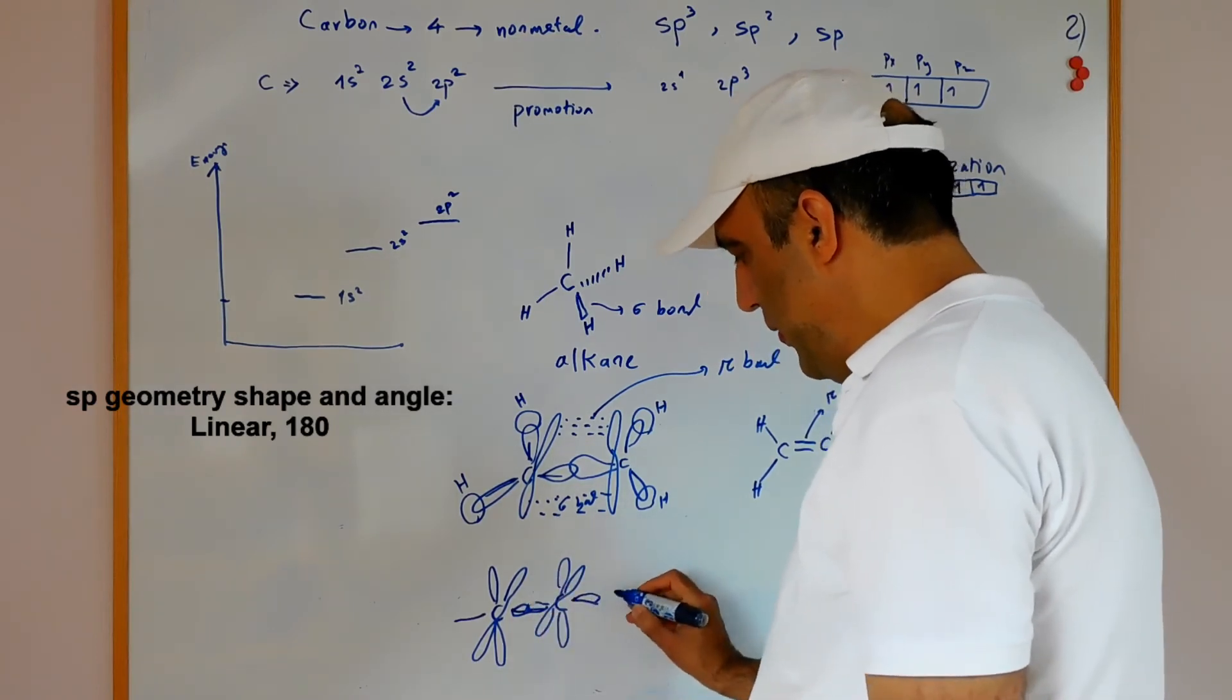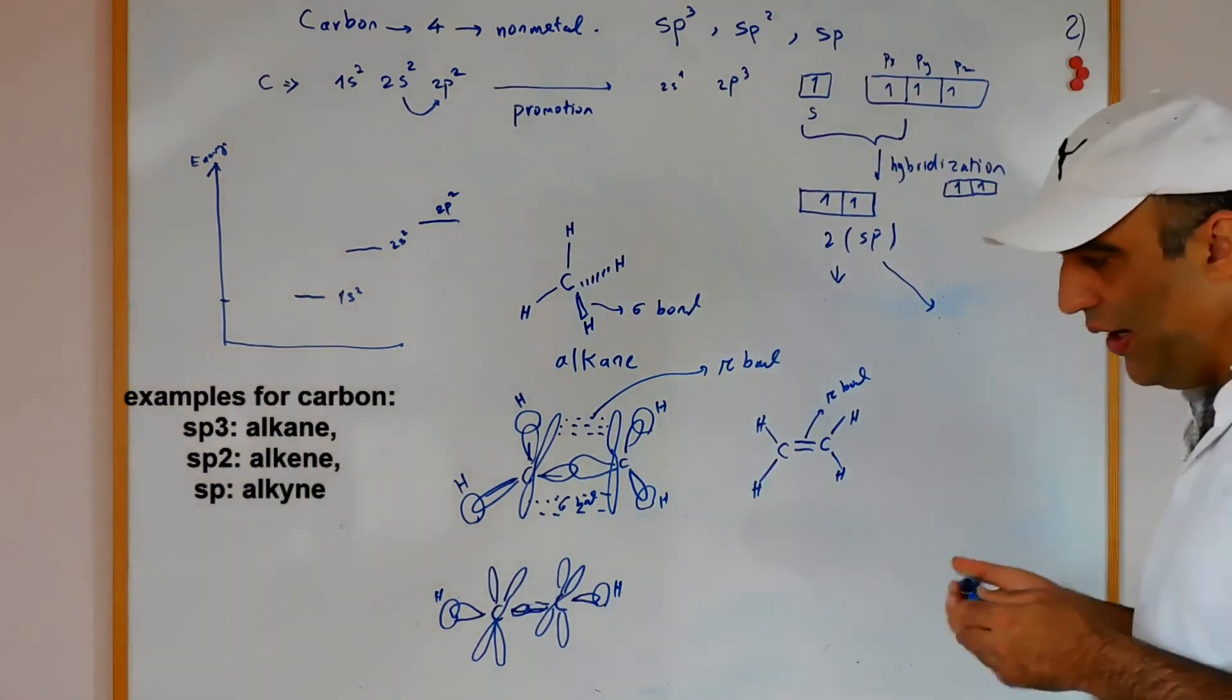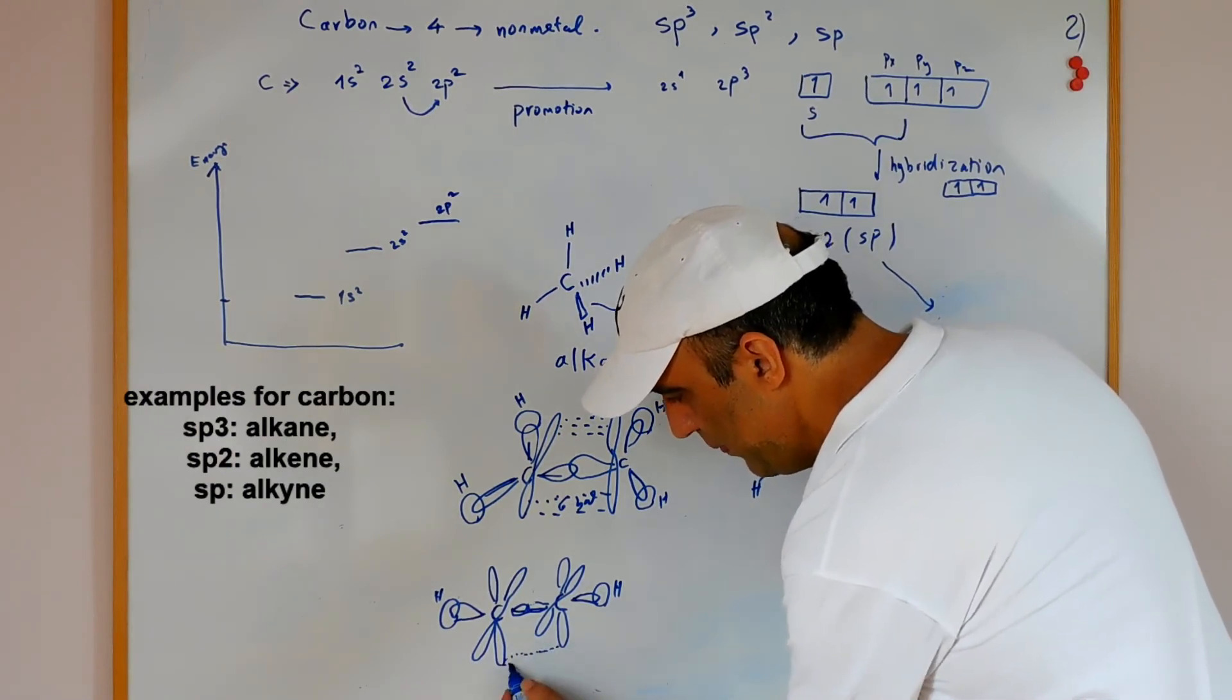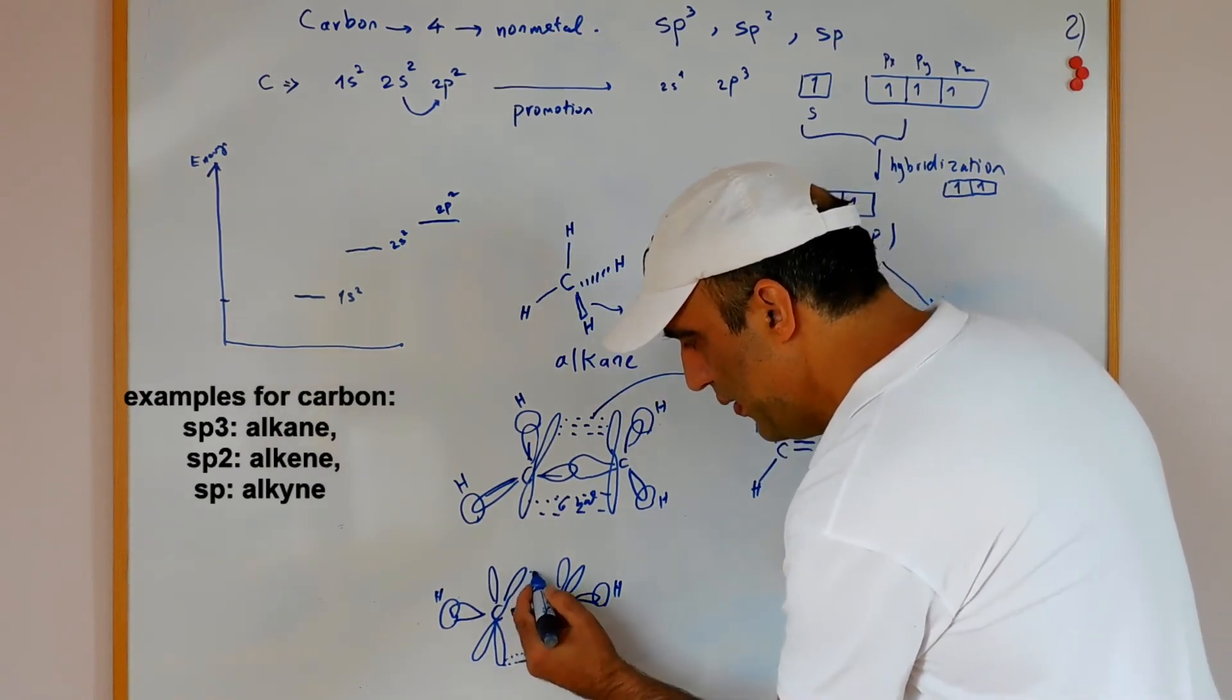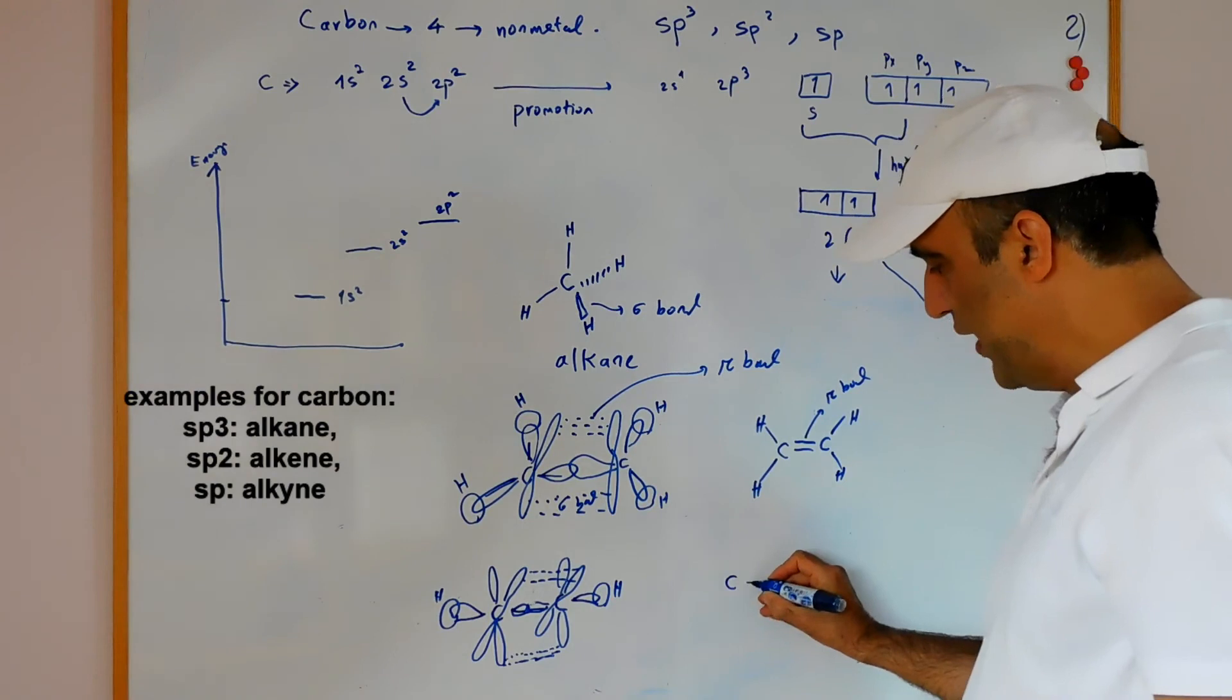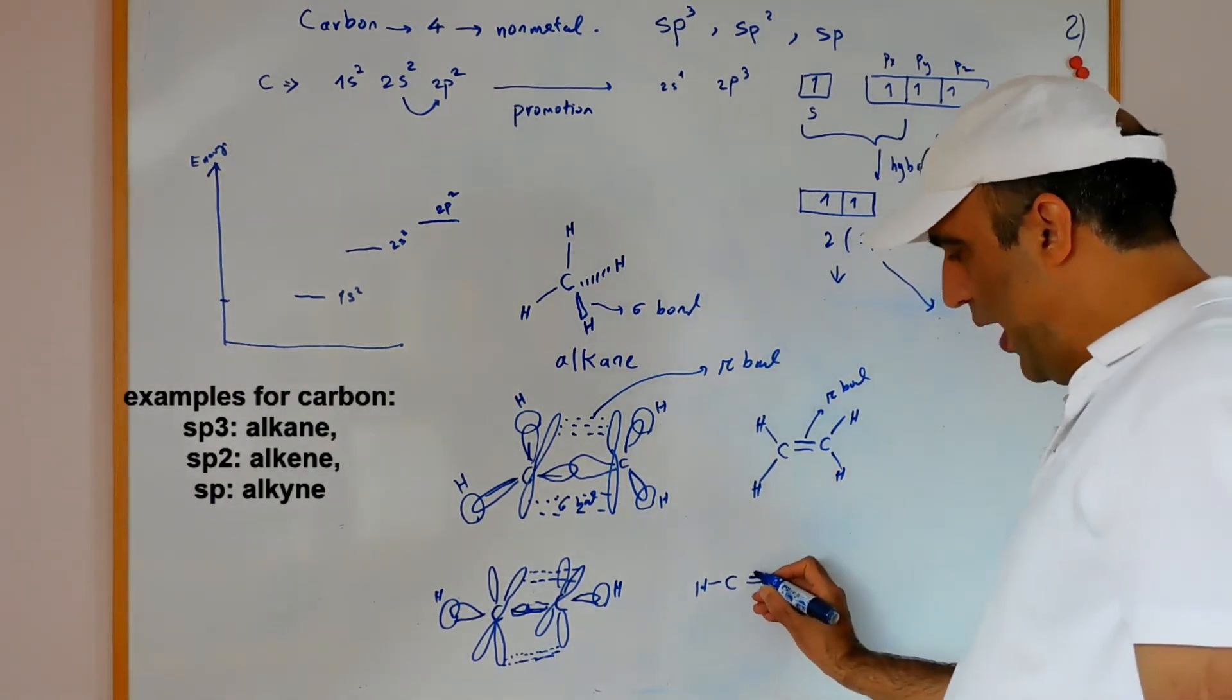This sp makes a bond, for example with hydrogen to make acetylene. The other p orbitals can overlap with each other. For example, py can overlap with each other and pz can overlap with each other. Two pi bonds will be formed. In this situation, carbon with carbon has two sigma bonds and two pi bonds.